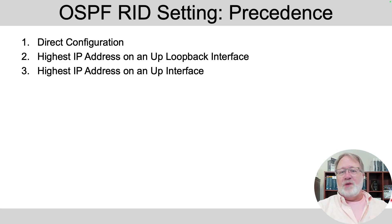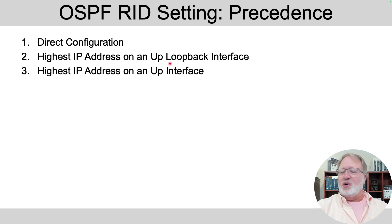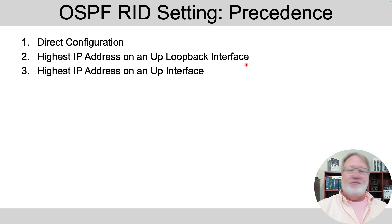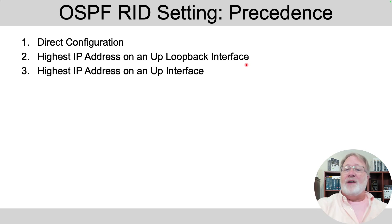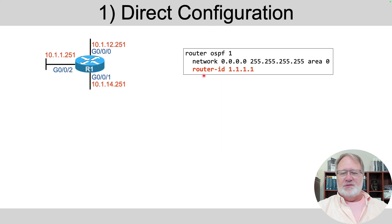A router's OSPF process uses a series of three rules to self-assign a router ID. There's direct configuration — that's the most obvious. Then there's a process that uses loopback interfaces, which we'll go through in some depth. And then the fallback, rule three, is to look at all existing interfaces and grab a router ID value from the IP addresses on any up-and-working normal interfaces.